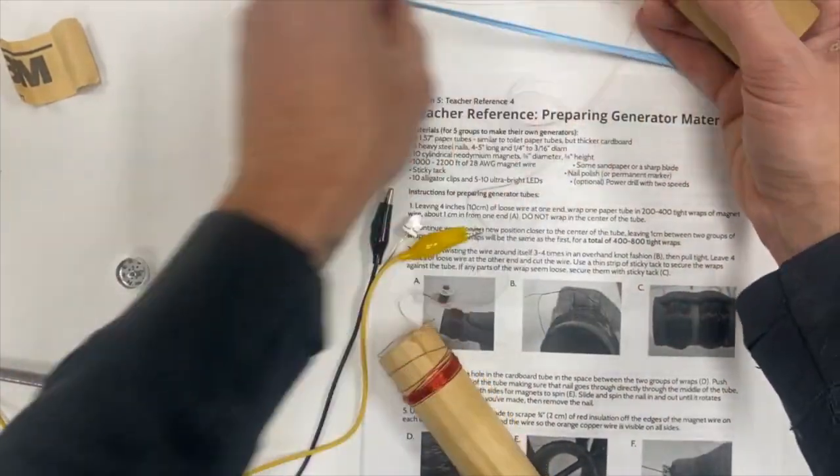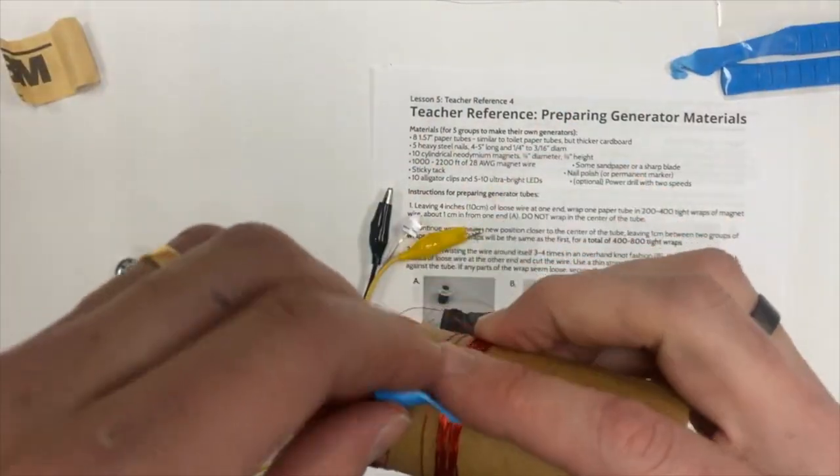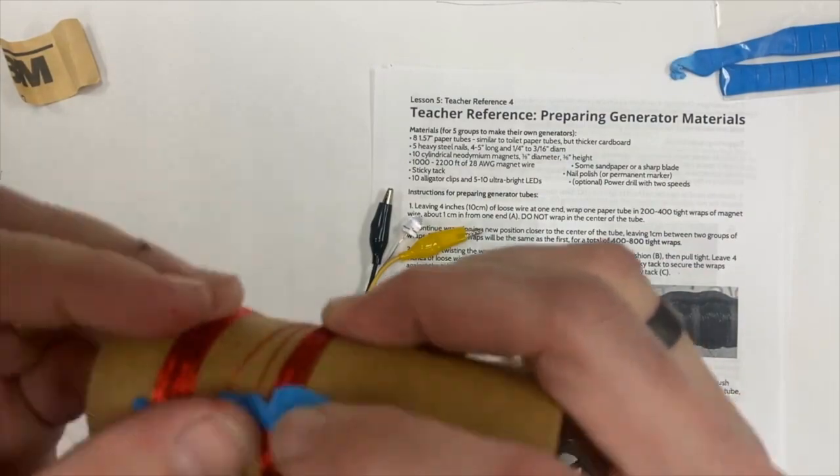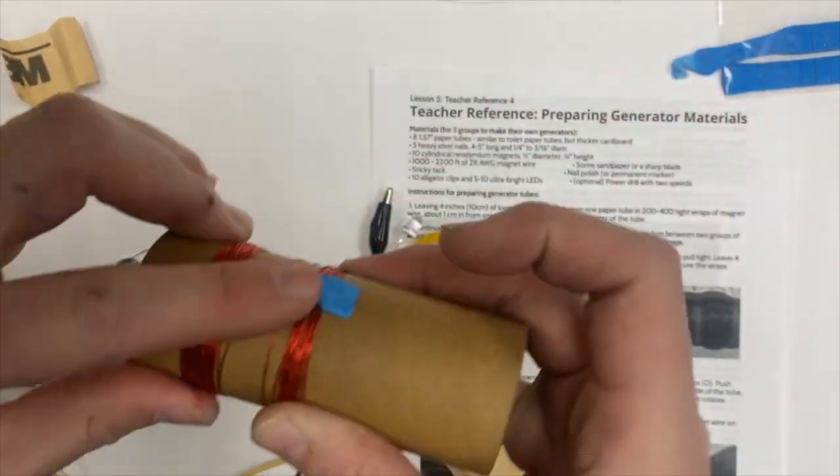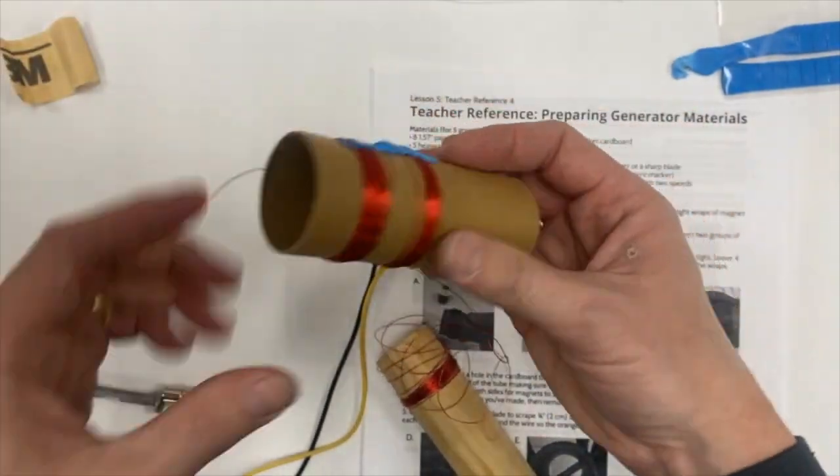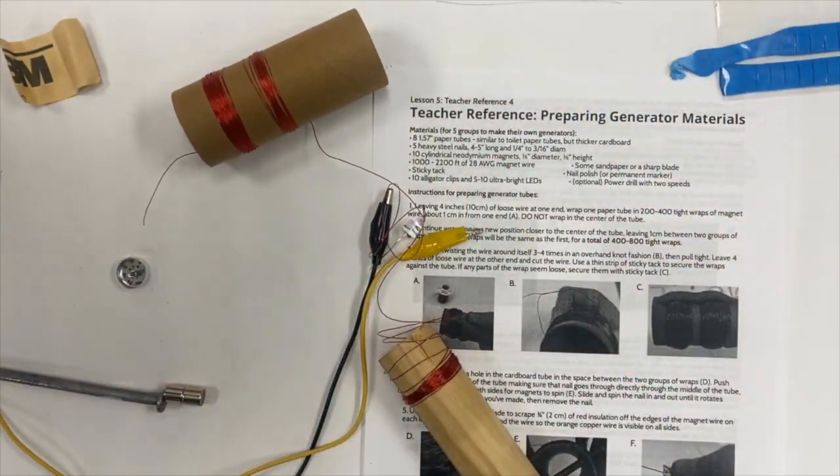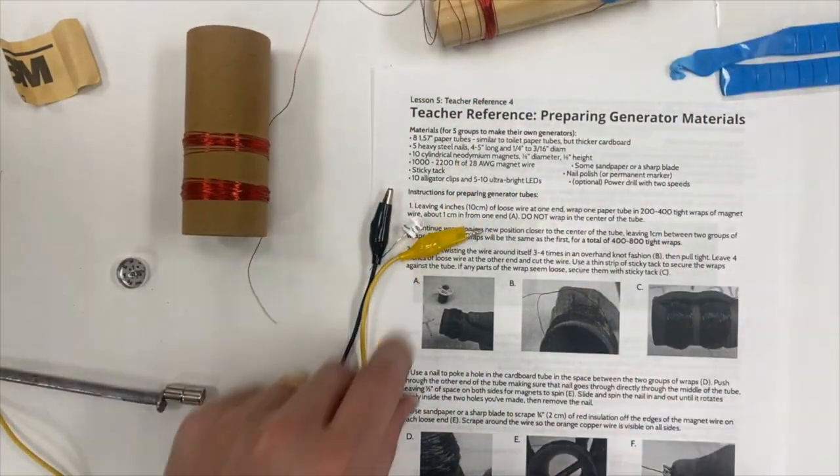And then I would take some sticky tack and put it across both wraps to sort of hold it together. You're going to do this later also, but it's important to keep it stuck there now so it doesn't all fall apart. If you start getting wires tangling, it makes this job much harder.